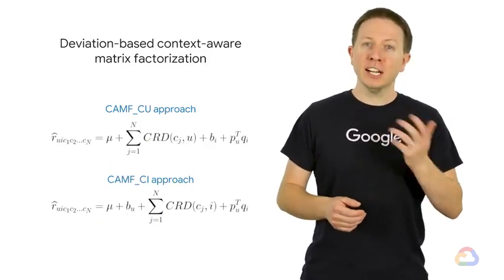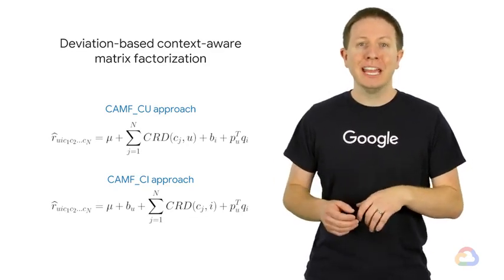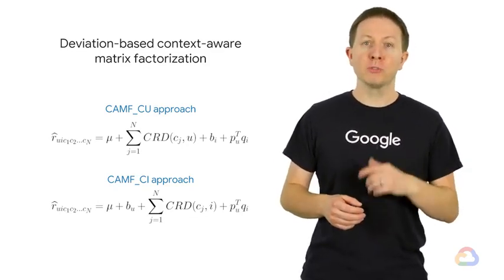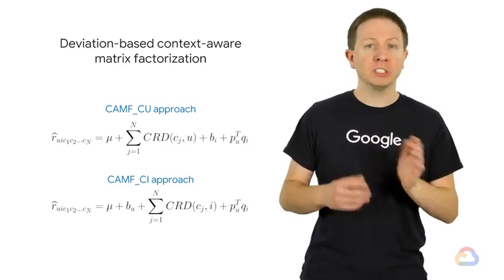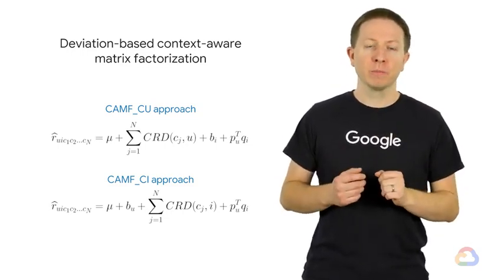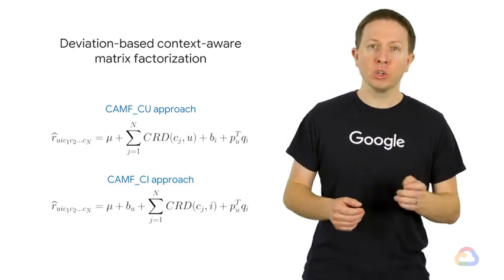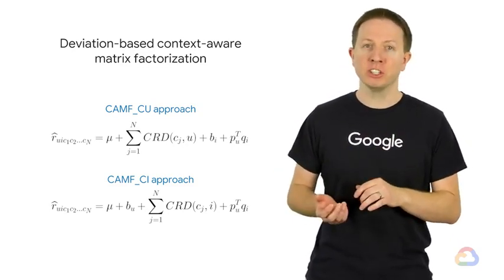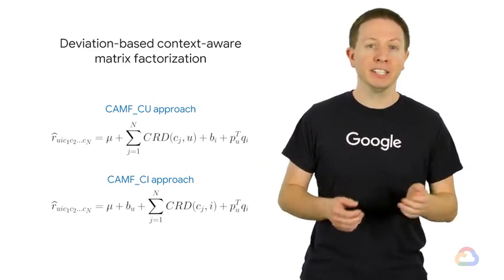There are also the context user and context item approaches. In the context user approach (CAMF_CI), we've absorbed the user bias term into our CRD function, which is now dependent on both context and user. In the context item approach, we've absorbed the item bias term into our CRD function, which is now dependent on both context and item.